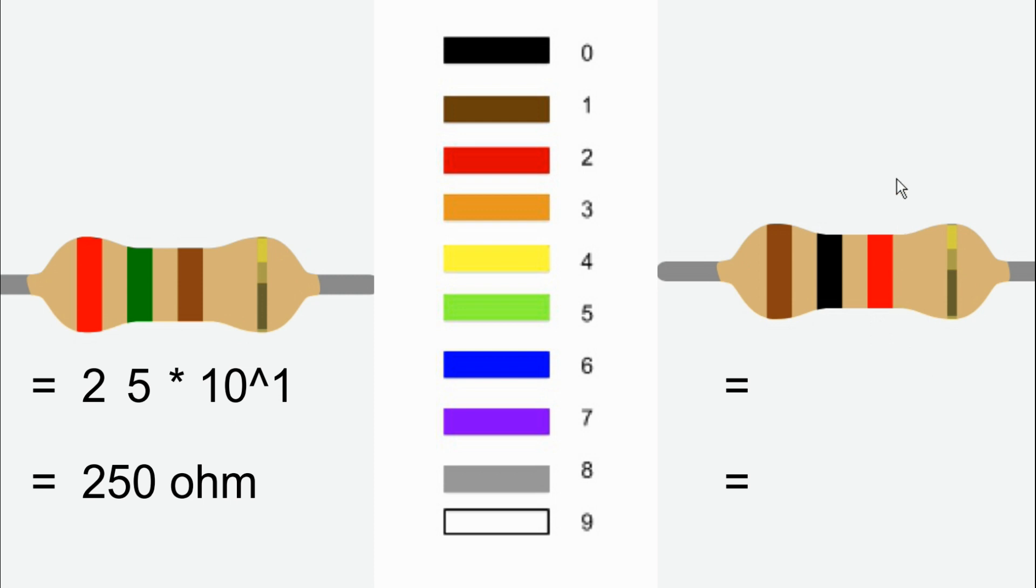Now for the next resistor, the first band is brown which is 1. Second band is black so the value is 0. The multiplier band is red, so into 10 power 2. 10 times 10 power 2 equals 1000 ohms.